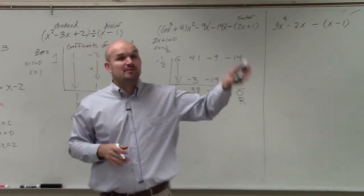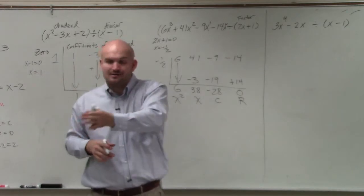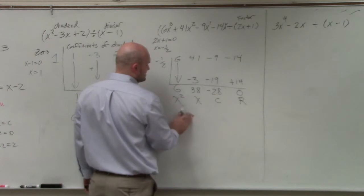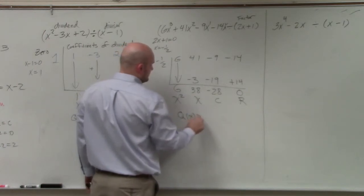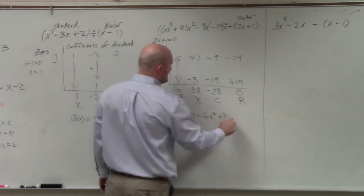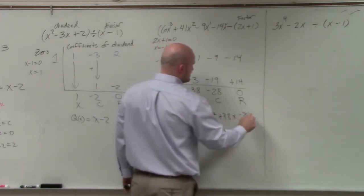And if you had more and more numbers, you would just keep on going up higher and higher. So therefore, my answer, q of x, is equal to 6x squared plus 38x minus 28.